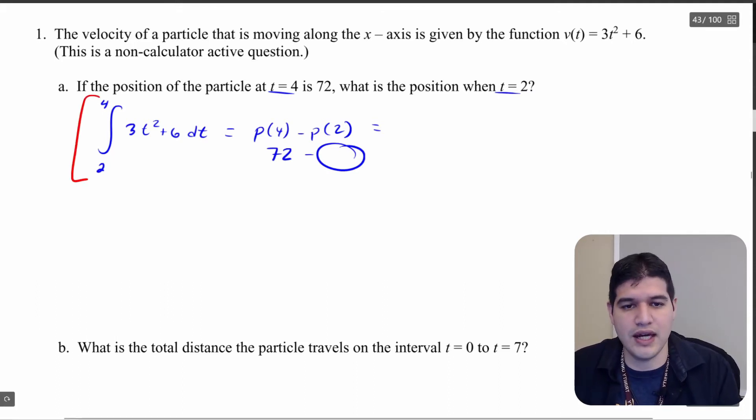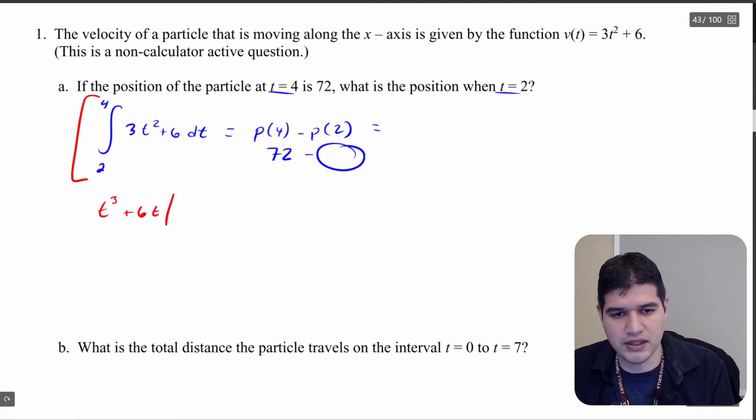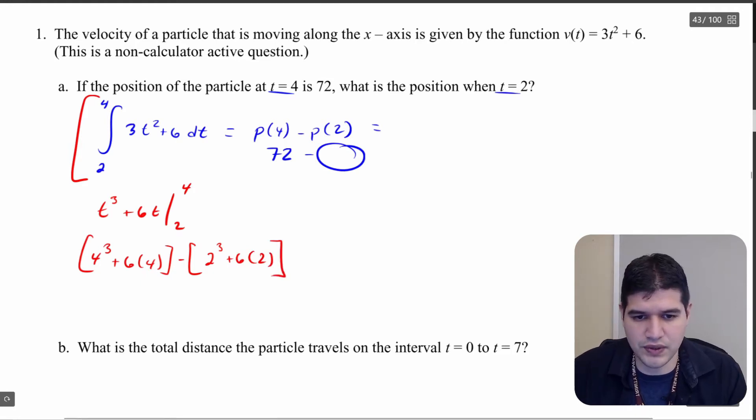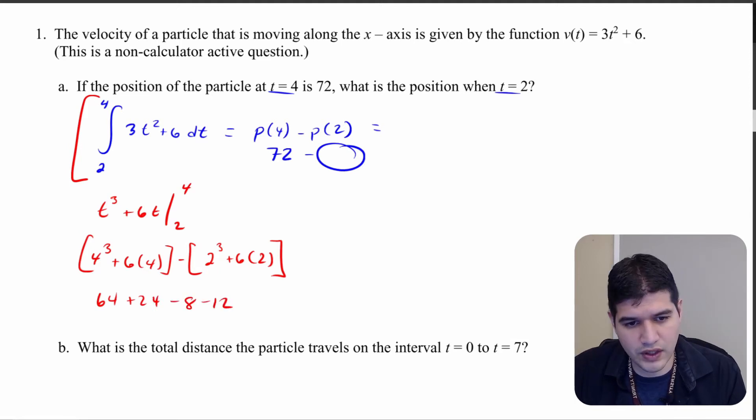So let's go ahead and do that now. I'm going to get t to the third plus 6t, of course we're leaving plus c off and we're going from 2 to 4. So that's going to be 4 cubed plus 6 times 4 minus 2 cubed plus 6 times 2. So we're going to evaluate that, that's going to be 64 plus 24 minus 8 minus 12. So all of this comes out to be 68.